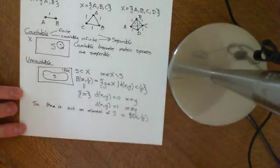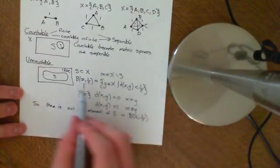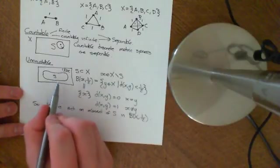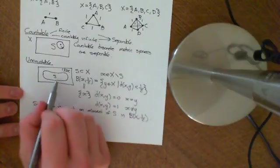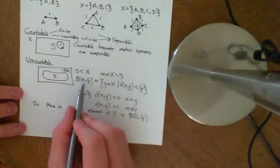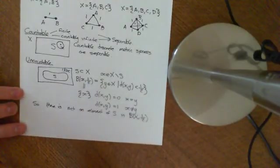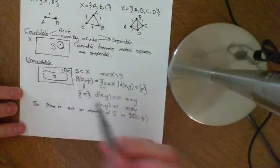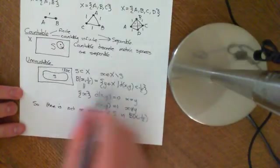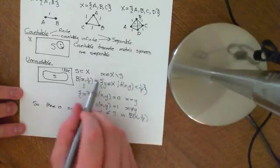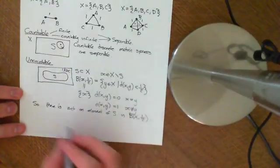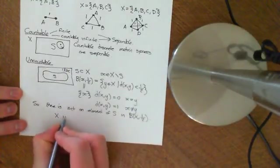Which proves that there can be no countable subset of this metric space which is dense within this metric space, because I found you here a point which is not a limit point for that set S, providing S is countable. And you can always construct such a point and an open ball. So that implies X is not separable.